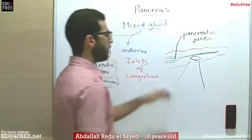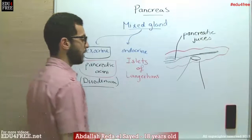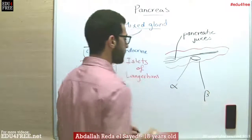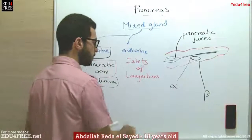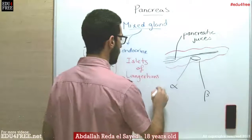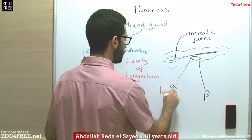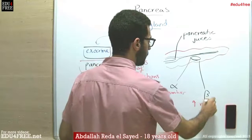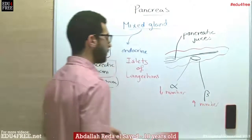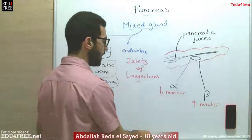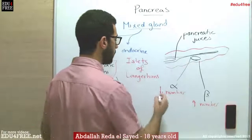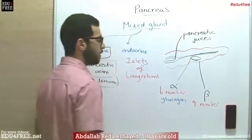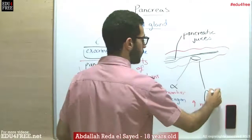The islets of Langerhans has two types: alpha cells and beta cells. The alpha cells are low in number and secrete a hormone called glucagon. The beta cells are high in number and secrete a hormone called insulin.